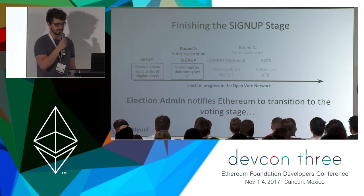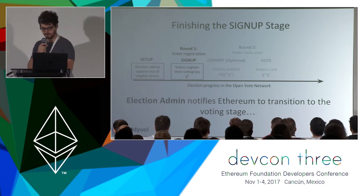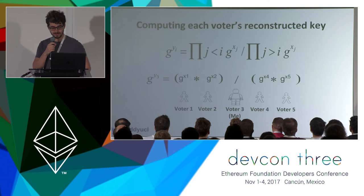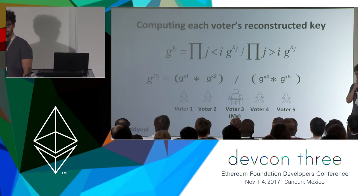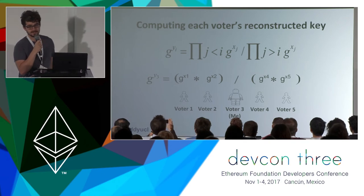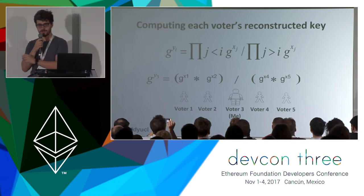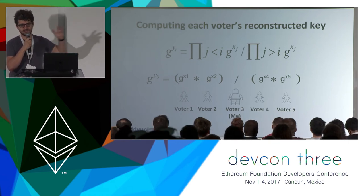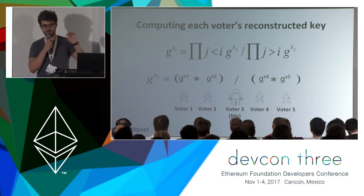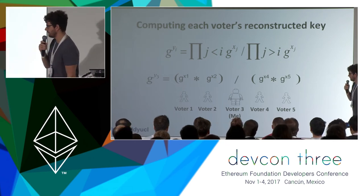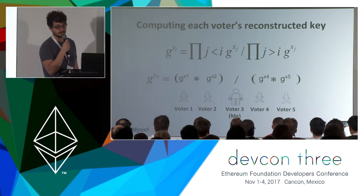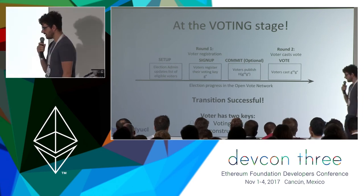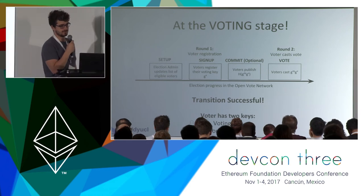I've got this really ugly formula, so I'm going to explain it using a little robot. If I'm voter 3, the way I compute my reconstructed key is: I get the voting keys of voters 1 and 2 and multiply them together; I get the voting keys of voters 4 and 5 and multiply them together; I divide those two results, and then I end up with my own reconstructed key. We do this for every single voter — in fact, Ethereum does that for every single voter. Once we reach the voting stage, every single voter has a voting key and a reconstructed key.